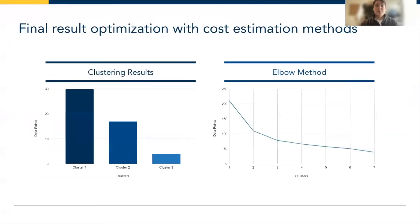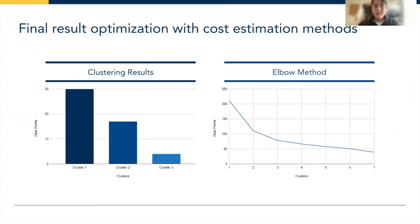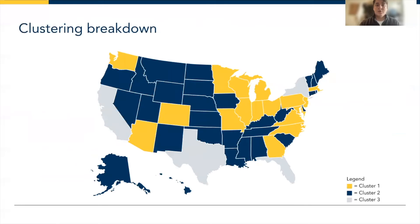We ran the k-prototype clustering model again, this time with three clusters. As you can see, the elbow method still identifies three clusters as optimal, so that is what we moved forward with. You can see the state breakdown here — the states are broken into three different clusters. Cluster one contains the most states, cluster two has quite a fair amount as well, followed by cluster three.